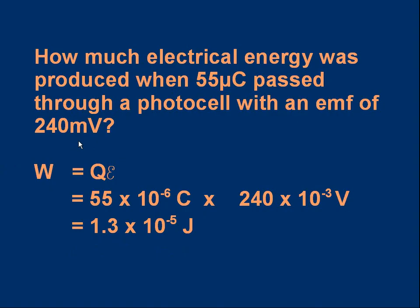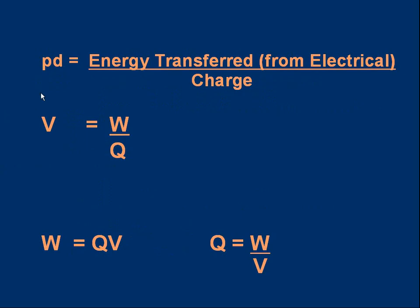Let's look at potential difference or voltage. The equations and the definition are practically the same. The only difference is the energy transferred is from electrical. For EMF we're producing electricity. When we talk about potential difference or voltage we're talking about electrical energy being used up. And the definition is almost the same. It's the energy transfer divided by the amount of charge. That gives us a potential difference or voltage.